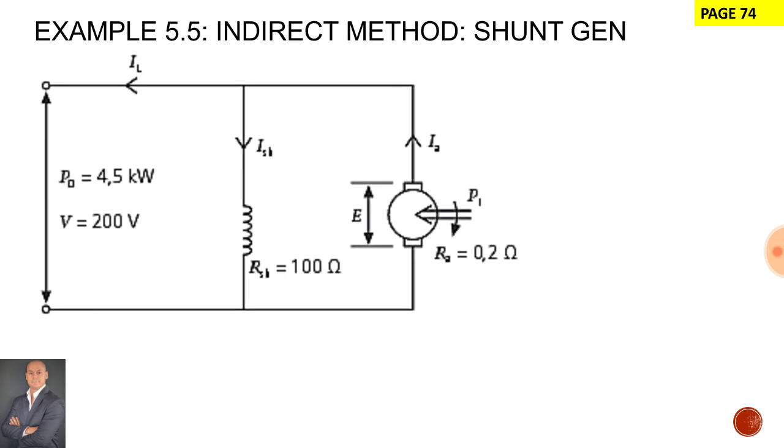Now in this example 5.5 on page 74 of our textbook we'll be looking at the indirect method for testing a shunt generator.